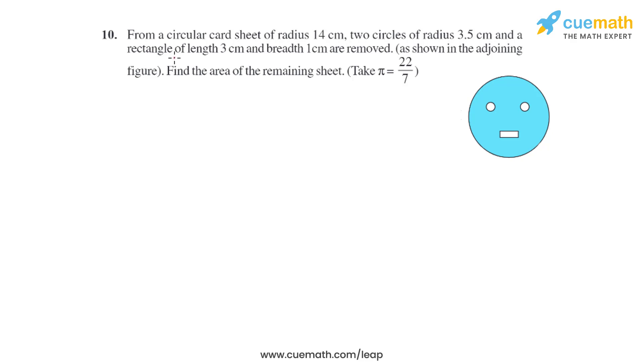Question 10 of this exercise says: from a circular card sheet of radius 14 centimeter, two circles of radius 3.5 centimeter and a rectangle of length 3 centimeter and breadth 1 centimeter are removed. Find the area of the remaining sheet. As we can see in the figure, two circles of radius 3.5 centimeter is removed and a rectangle is removed.